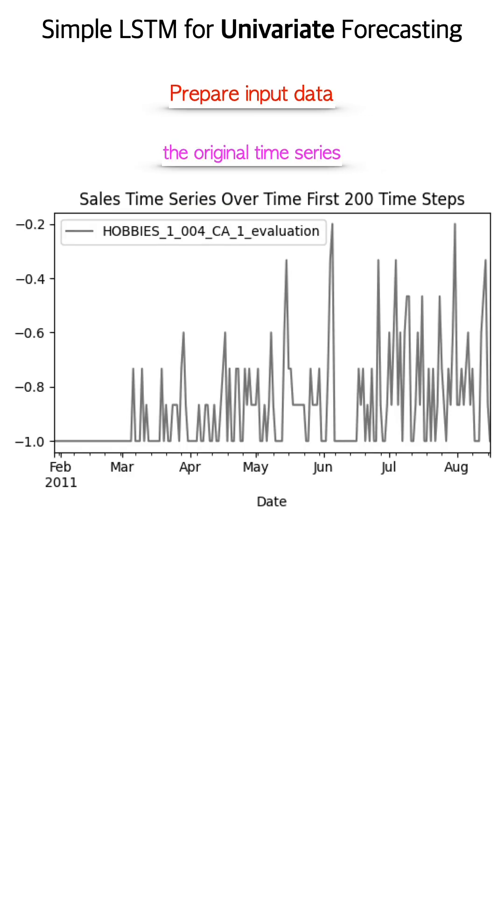Let's start with univariate time series forecasting, where all the information we use to forecast the future is the historical values.